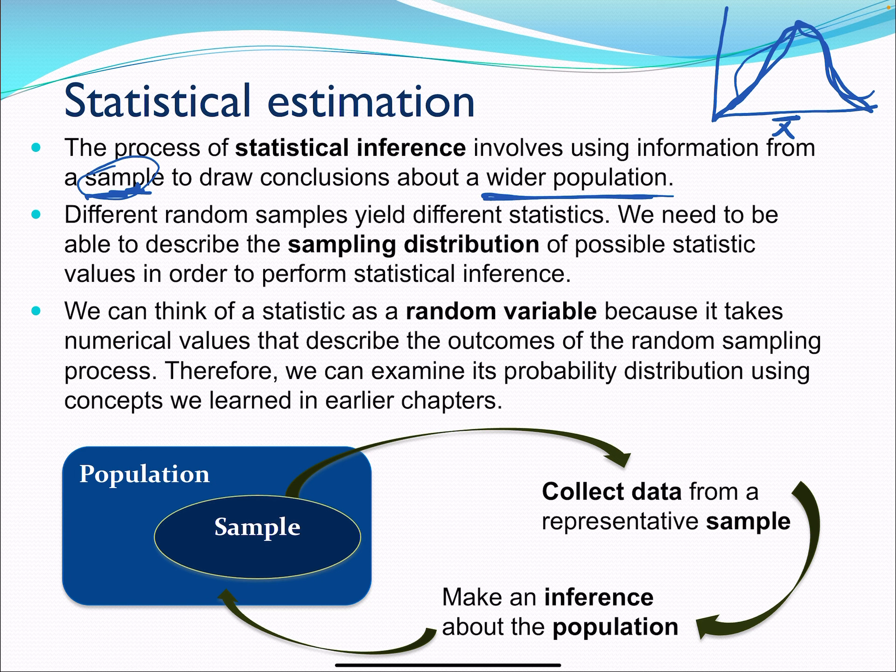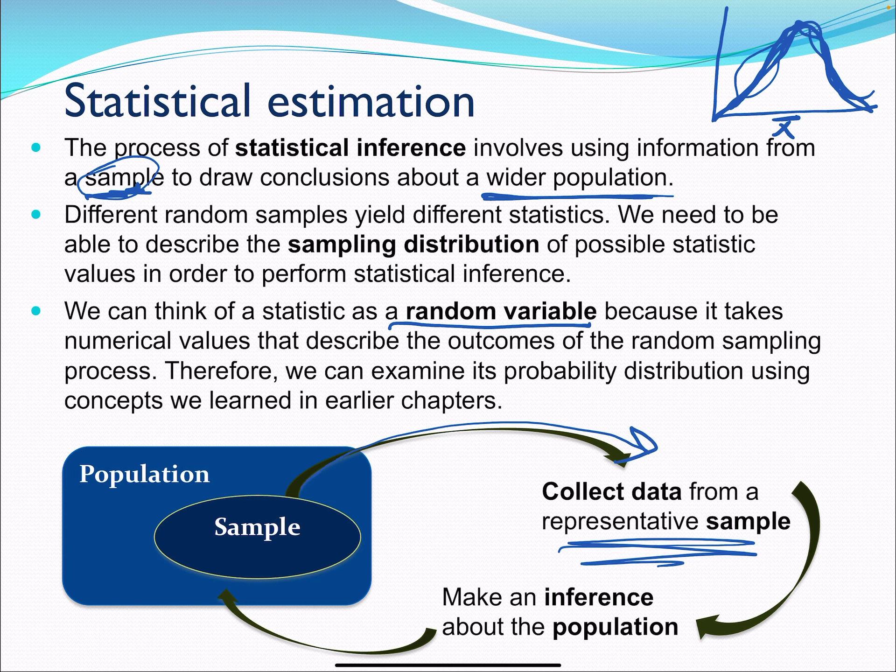We can think of our statistic as a random variable, because it takes numerical values that describe the outcomes of the random sampling process. Therefore, we can examine its probability distribution using concepts we learned in earlier chapters, and I promise it's going to fit a normal distribution eventually. So we've got our population, we take a sample, we collect data about that sample—as long as the sample is representative—and we use that to make inferences about the population.